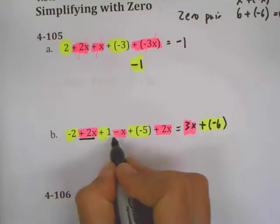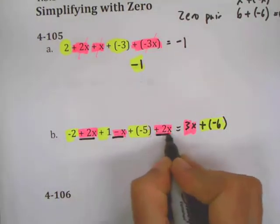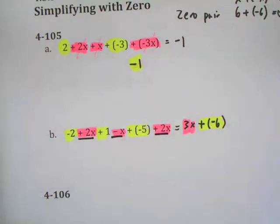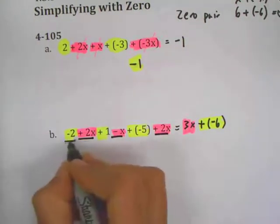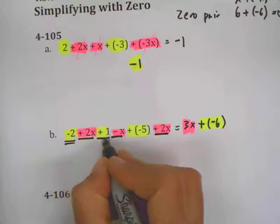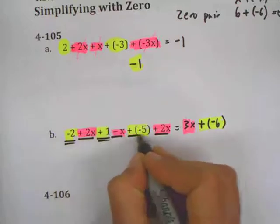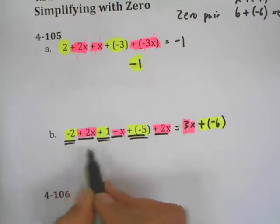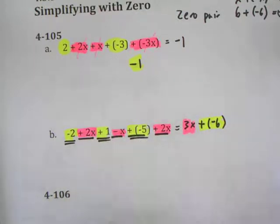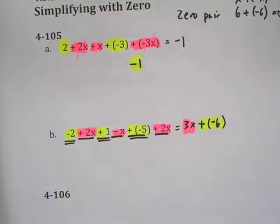Another strategy you can use: underline the terms that have just x's once, and maybe double underline the constants. When you're finished, everything should be included, including all of the signs. If you don't include the signs, your final answer might be off.